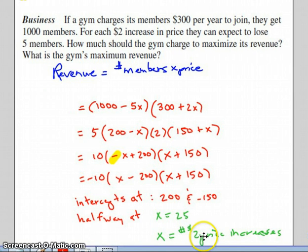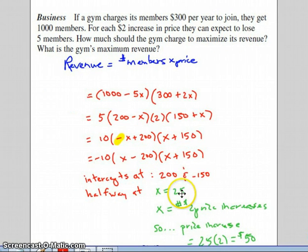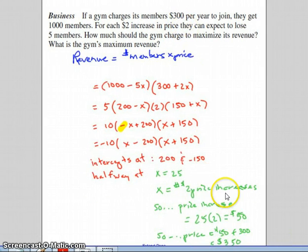And remember again, we'd said that x represents the number of price increases, and those price increases are $2 each, not $1 each, but each price increase is $2. So that means if there are 25 price increases of $2, then we're increasing the price by $50. The price we started at in the story was $300. So we're raising the price to $350. And that's the answer to this first question. How much should the gym charge to maximize its revenue? Working your way through this problem as I have here, you end up with the conclusion that the right price would be $350. And that's always going to be that maximum, or in some cases minimum, is always going to be halfway between the two intercepts.